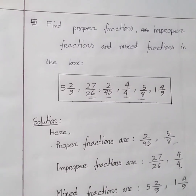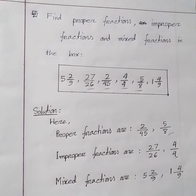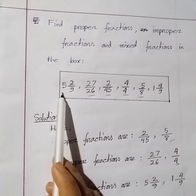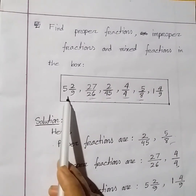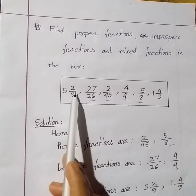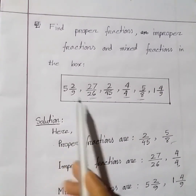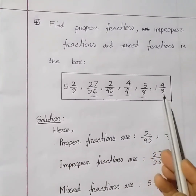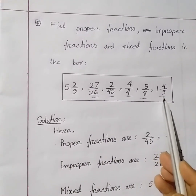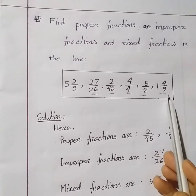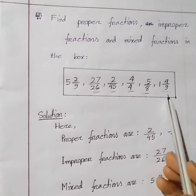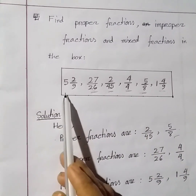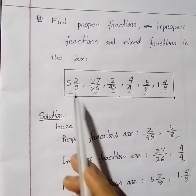And there is another improper fraction, so you have to write the mixed fractions. You can see here: 5 whole 2 by 9 and 1 whole 4 by 9 are mixed fractions.